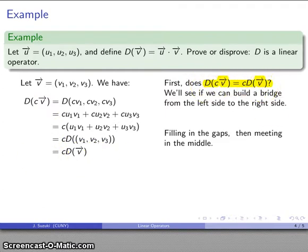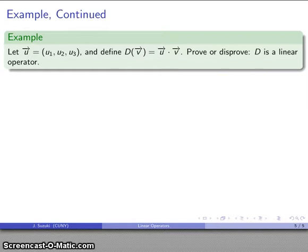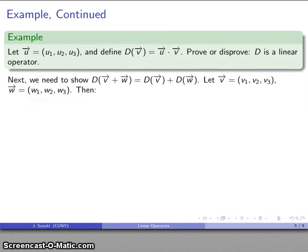Now the other thing we have to show in order to claim that D is a linear operator is we have to show it also preserves vector addition. So D applied to the sum of two vectors is the same as the sum of D applied to the vectors individually.